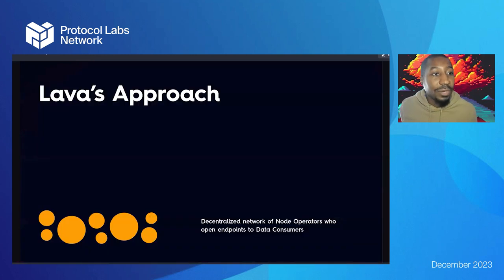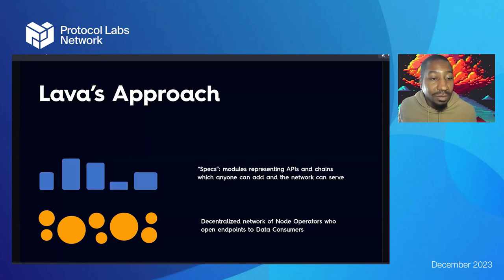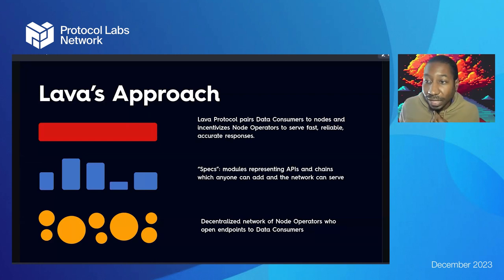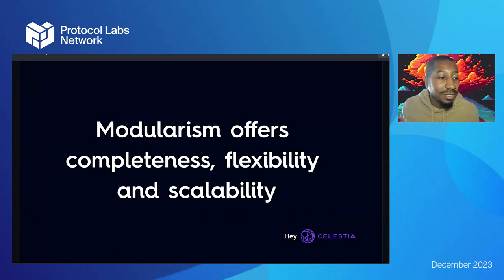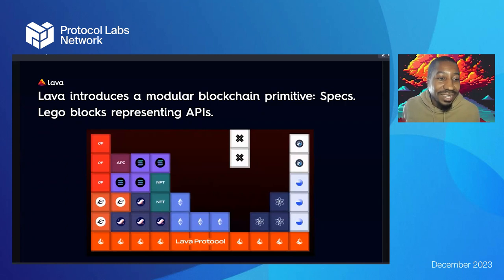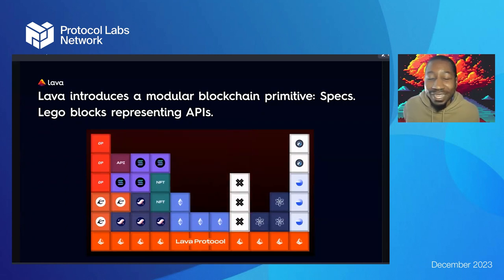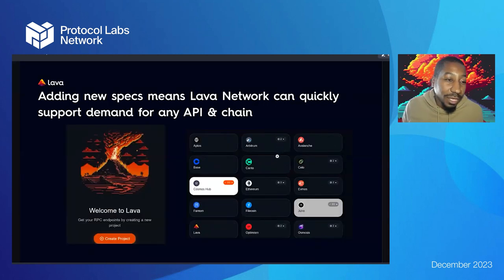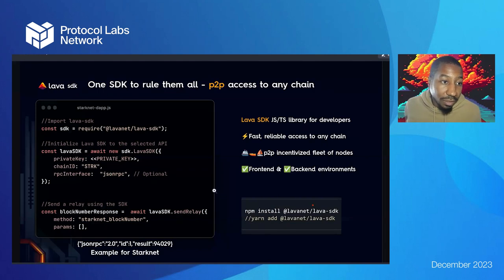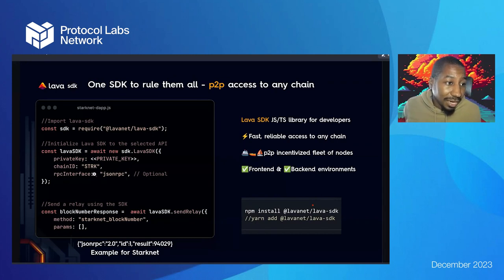Lava Network offers modular data access for Ethereum, Filecoin, and all of web3. There's a decentralized network of node operators with open endpoints. We use specs — a modular system for representing APIs and chains — so anybody can serve. The Lava protocol pairs data consumers to nodes and incentivizes node operators to serve fast, reliable, accurate responses. Using the SDK you can initialize multiple chains with very simple calls and make calls independent of how that chain is communicating.